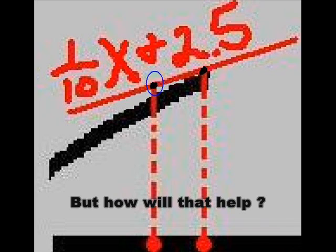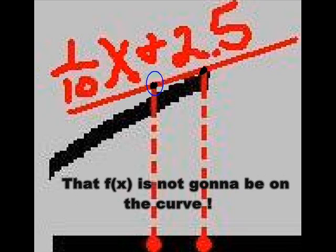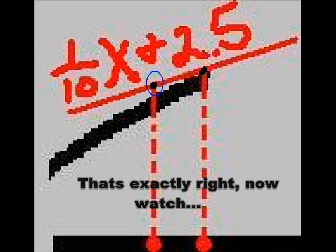But how will that help us in any way, shape, or form? Because it's going to give you an f(x) that's on the tangent line, on the tangent line. That f(x) on the tangent line is not going to be on the curve. So how is that going to help you? It's going to miss the curve. Well, that's exactly right. Now watch.